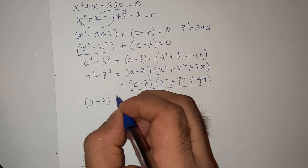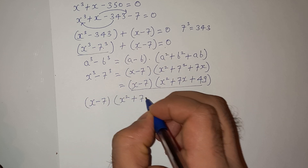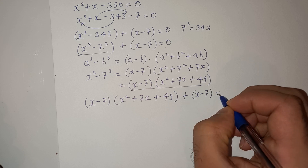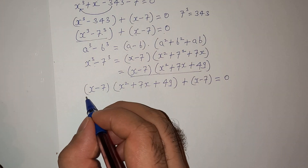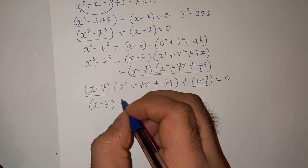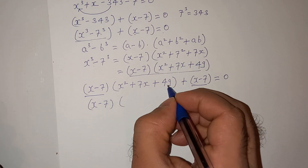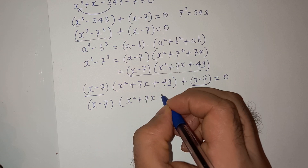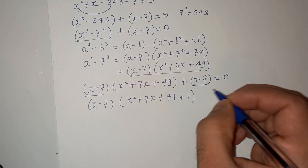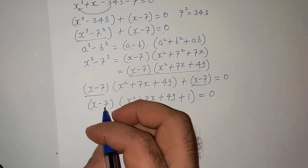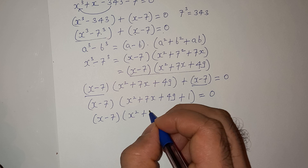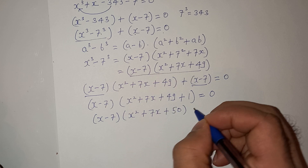So (x minus 7)(x² + 7x + 49) plus (x minus 7) equals to zero. You can see that (x minus 7) is common here, so we can take it out. This gives us (x minus 7)(x² + 7x + 49 + 1) equals to zero, which is (x minus 7)(x² + 7x + 50) equals to zero.